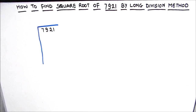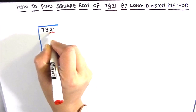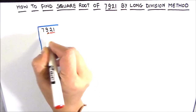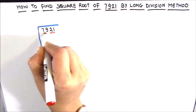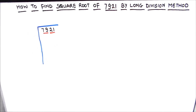The first step is to group the numbers in pairs starting from the units digit. Our units digit is 1, so our first pair will be 21 and the other pair will be 79. So we have two pairs: 79 and 21.